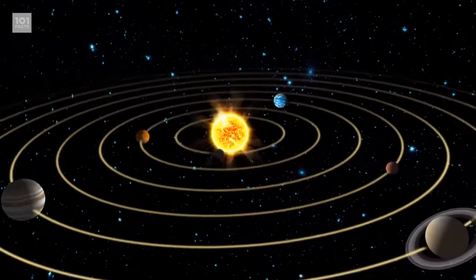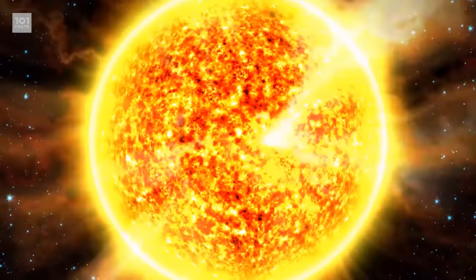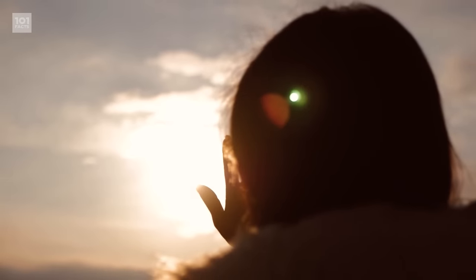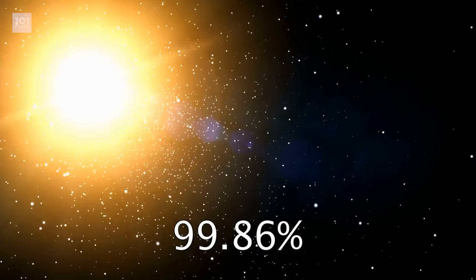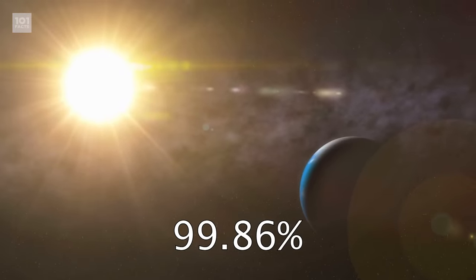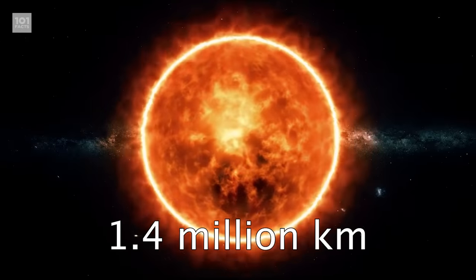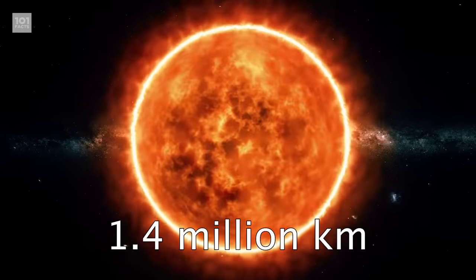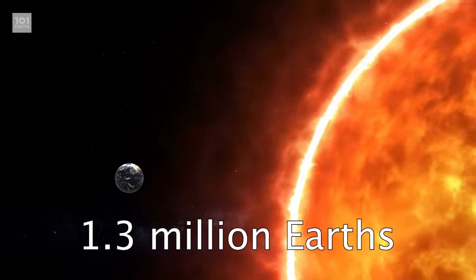So at the center of our solar system is the sun. And yes, we know it's massive, but just how massive is it? Well, 99.86% of the entire mass of the solar system is found in the sun. In terms of literal size, it's around 1.4 million kilometers in diameter. It would take around 1.3 million Earths to fill it.